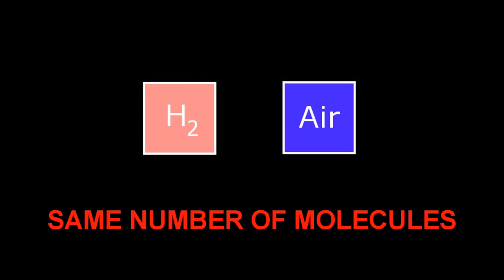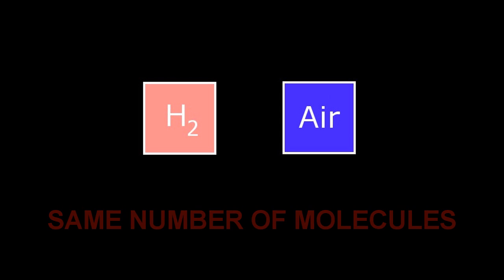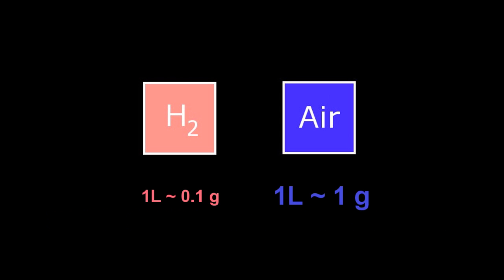Now it turns out that hydrogen molecules are actually a lot lighter than the nitrogen and oxygen molecules that make up air. So the mass of one liter of hydrogen is about 0.1 grams whereas the mass of one liter of air is about one gram.